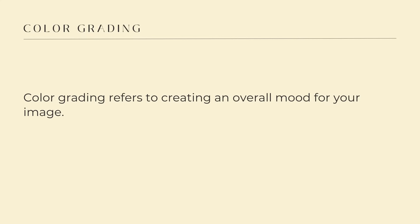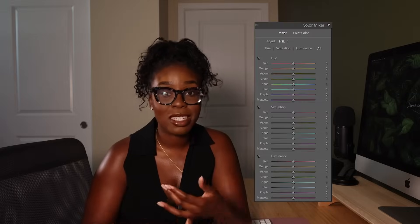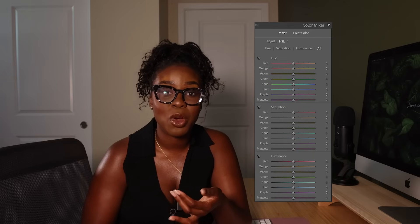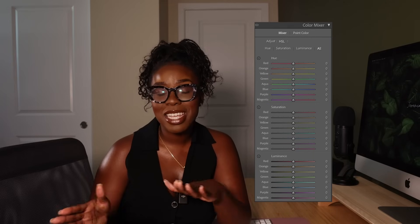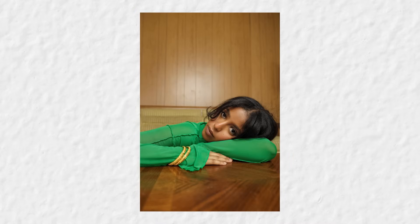Color correction is great, but what truly makes a photo feel cinematic? That's where color grading comes in. Color grading is all about creating that mood and feeling in your photo. You can do this by focusing on your HSL sliders in Adobe Lightroom, or you can even take it a step further by focusing on your color grading wheels. I personally am a huge fan of the color grading wheels because it allows you to add color to your highlights, shadows, and midtones.